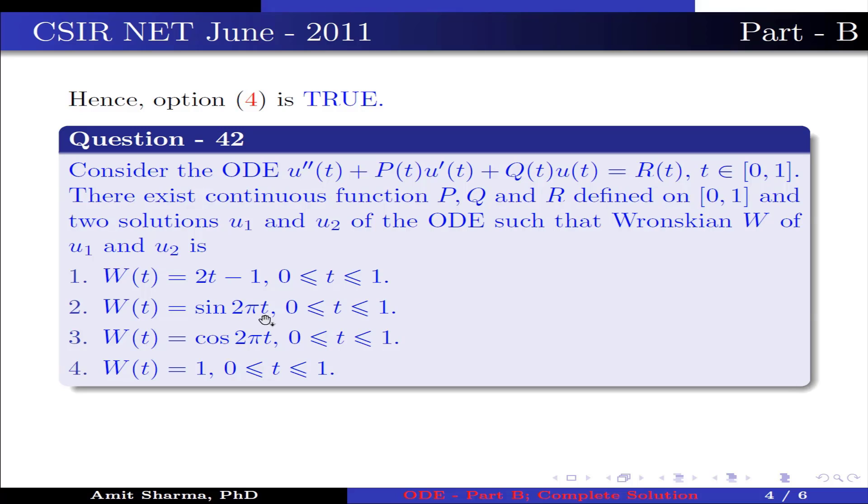Option 2: W(t) is equal to sin(2πt), 0 ≤ t ≤ 1. Option 3: W(t) equal to cos(2πt), 0 ≤ t ≤ 1. Option 4: W(t) equal to 1, 0 ≤ t ≤ 1.